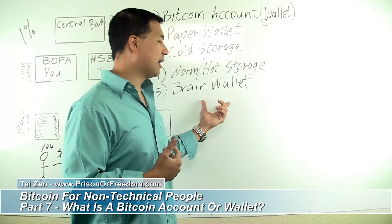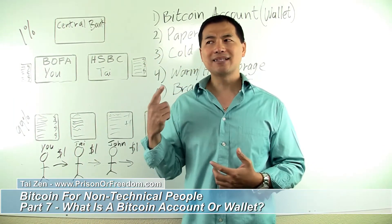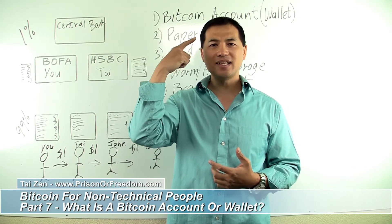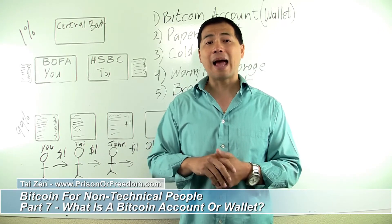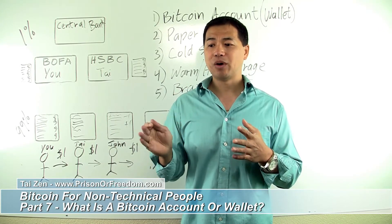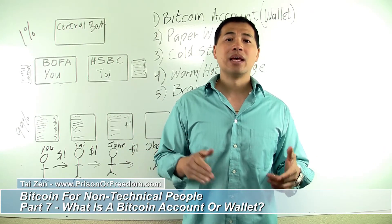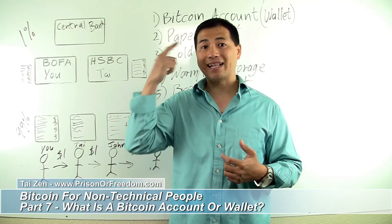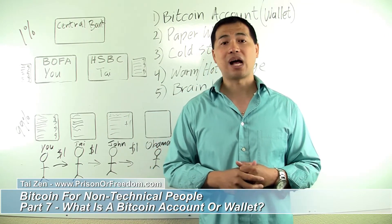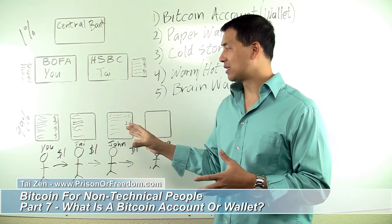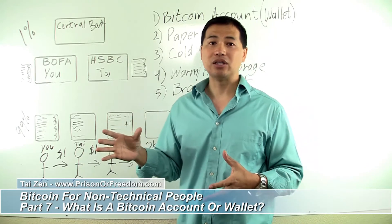So what I suspect is that the owner of Silk Road has the private key in his head — he's the only one that knows the password to open up that private key and access his Bitcoin account to send the money anywhere. They can put him in prison and do whatever they want with him, but the day he gets released, I suspect he's going to use his brain wallet — the private key in his head — to access those Bitcoins that were supposedly confiscated from him. That is the beauty of what the blockchain and Bitcoin can do.